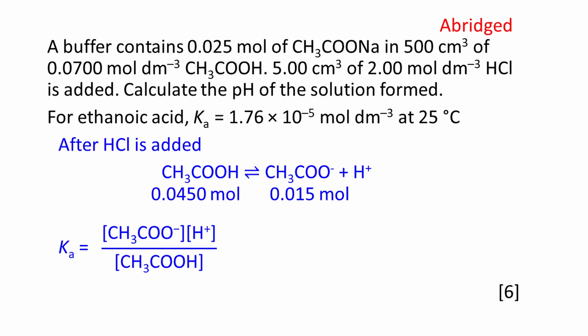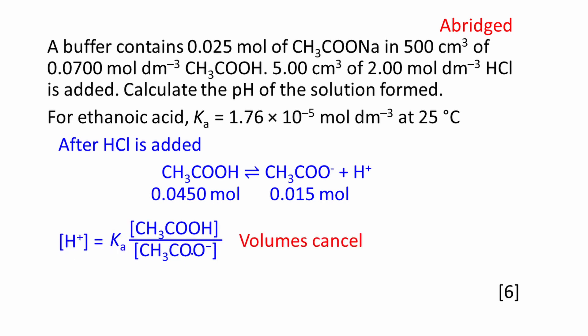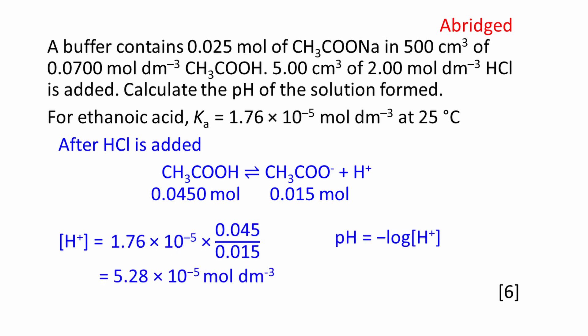We have to use the Ka expression to find the H plus ion concentration in the buffer solution. Rearrange this to make H plus concentration the subject. This is a very useful rearrangement and you should familiarize yourself with it. It is possible to work out the concentrations of ethanoic acid and ethanoate ions, but in this rearrangement, volumes cancel. It is possible to use amounts instead of concentrations. Substitute these amounts into the expression along with the Ka value given in the question. The H plus concentration works out to be 5.28 times 10 to the minus 5 moles per decimetre cubed.